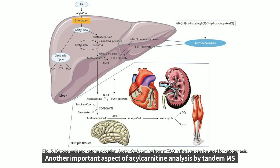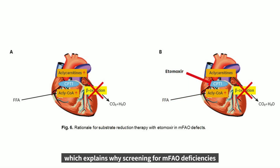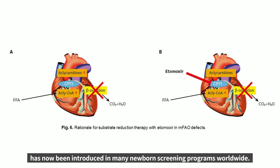Another important aspect of acylcarnitine analysis by tandem mass spectrometry is that this technique allows high-throughput analysis, which explains why screening for mitochondrial fatty acid beta-oxidation deficiencies has now been introduced in many newborn screening programs worldwide.